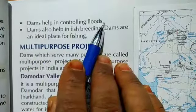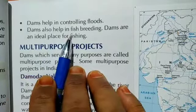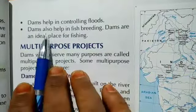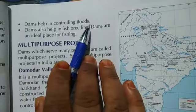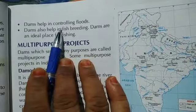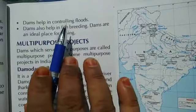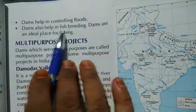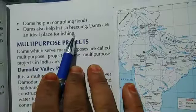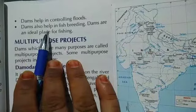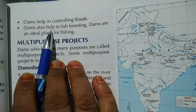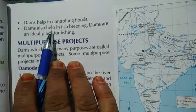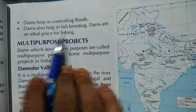Dams help in controlling floods because they control the flow of water. Dams also help in fish breeding. A big wall and a big tank are formed behind the dam walls, and this place is ideal for fish breeding because the flow of water is slow there.